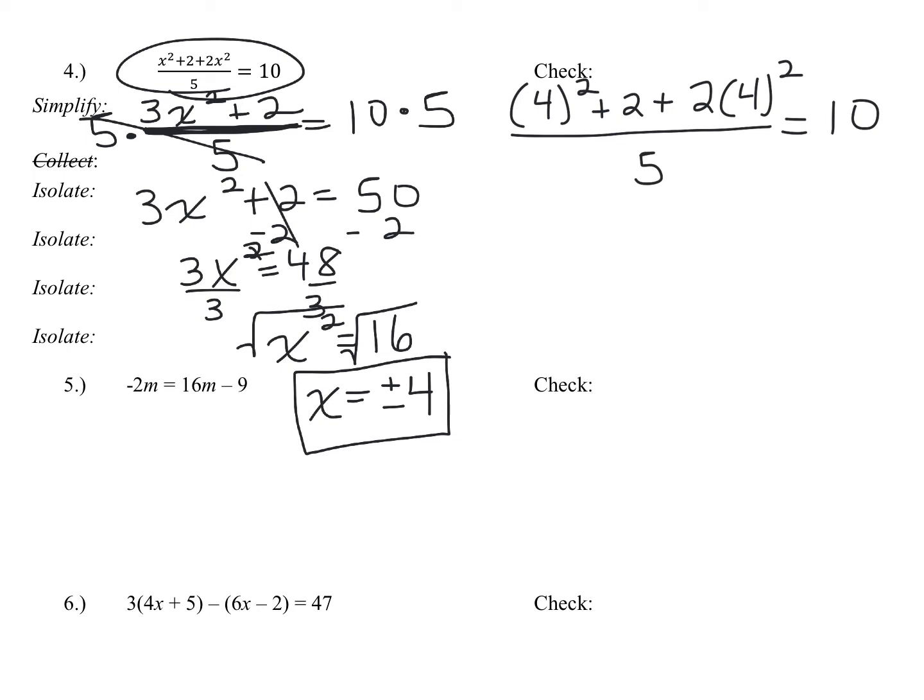So then I square. Four squared is 16, and I have plus two plus four squared is 16. So two times 16 over five equals 10. Following the order of operations, I want to multiply two times 16 first, which is 32. So I get 16 plus two plus 32 over five equals 10.